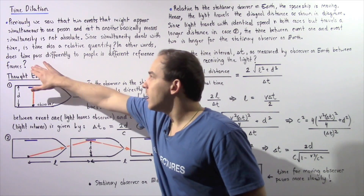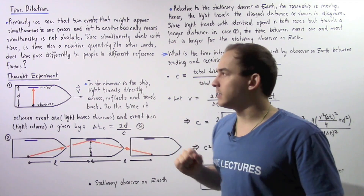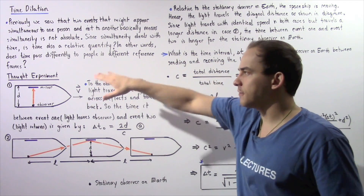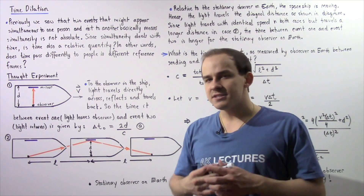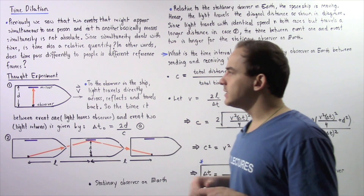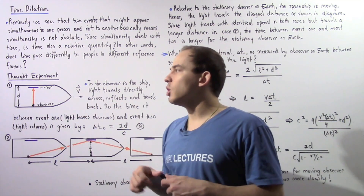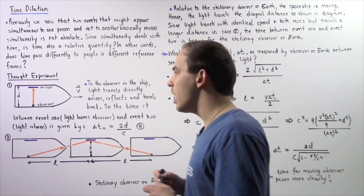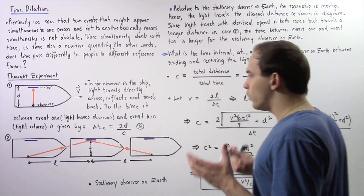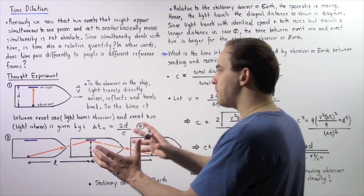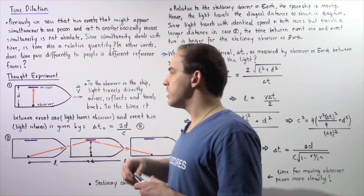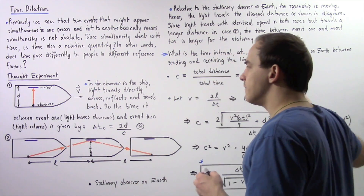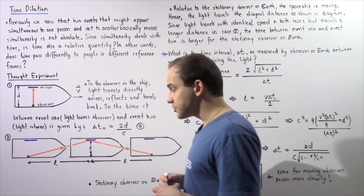That is, does time pass differently to people in different reference frames? To answer this question, let's conduct the following thought experiment. Let's begin with case number one, in which we have a spaceship that is moving with a constant velocity in the following general direction.